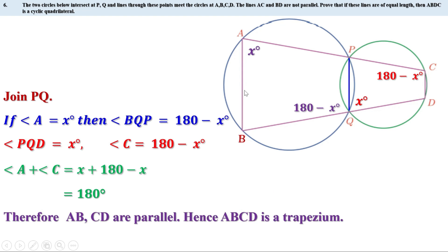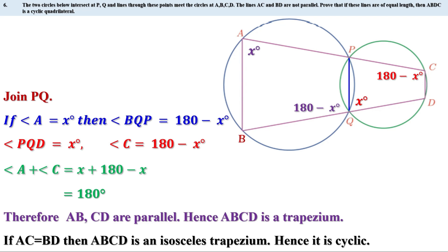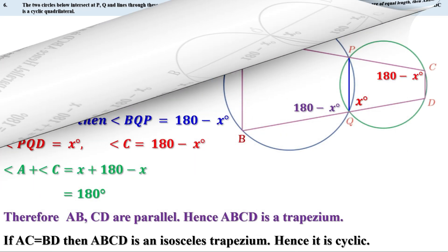AB and CD are parallel, meaning one pair of opposite sides of quadrilateral ABDC is parallel — so it is a trapezium. Now if AC equals BD, then ABDC becomes an isosceles trapezium. We know isosceles trapeziums are cyclic, so if AC equals BD, then ABDC is a cyclic quadrilateral.